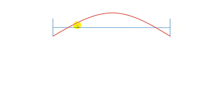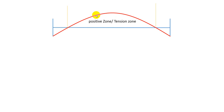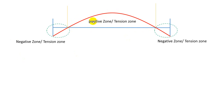Now suppose this is a beam — here is a fixed point and here is a fixed point, just like in our building. If we draw a moment diagram for that fixed beam — both sides fixed — we will find a moment diagram like that way. Here this is the positive zone or tension zone. From that point to that point, the beam is in tension mode, and when the moment is in a positive zone, tension will work at the bottom.